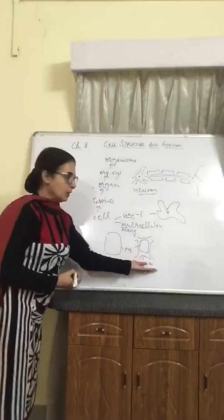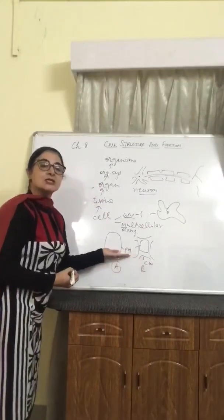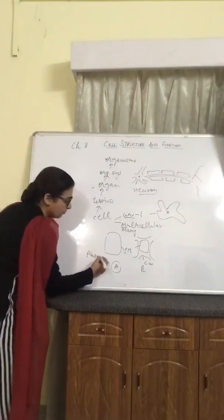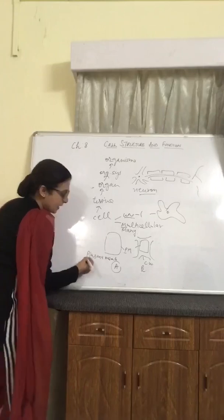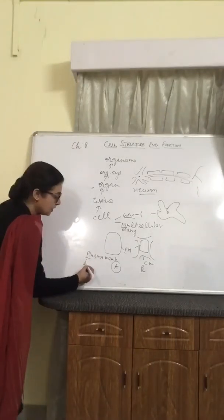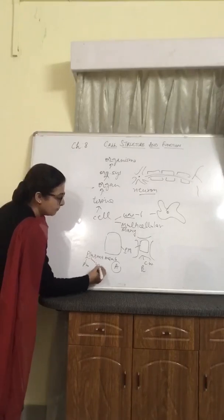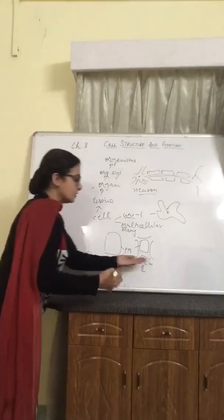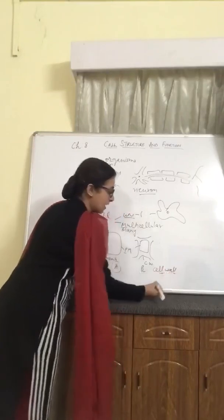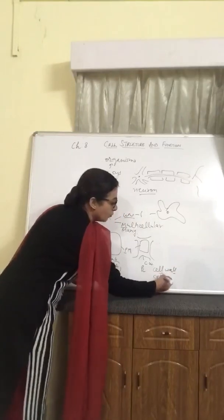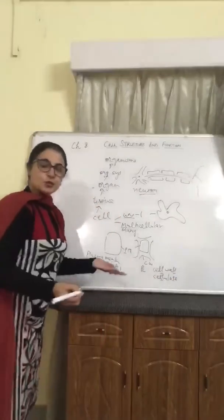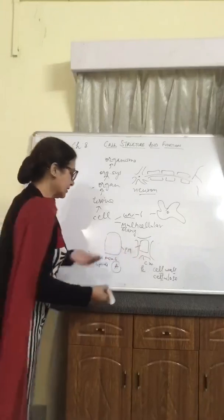If we go by the spellings of 'plasma membrane,' the first two letters P and L tell us its constitution: P for proteins and L for lipids. And if we go by the spellings of 'cell wall' — C-E-L-L-W-A-L-L — there are many L's, and it is made up of a component known as cellulose, which also has many L's. So we can easily correlate and never forget it.